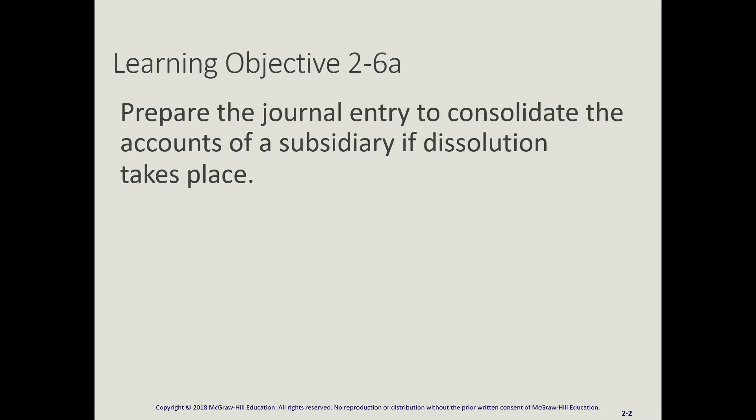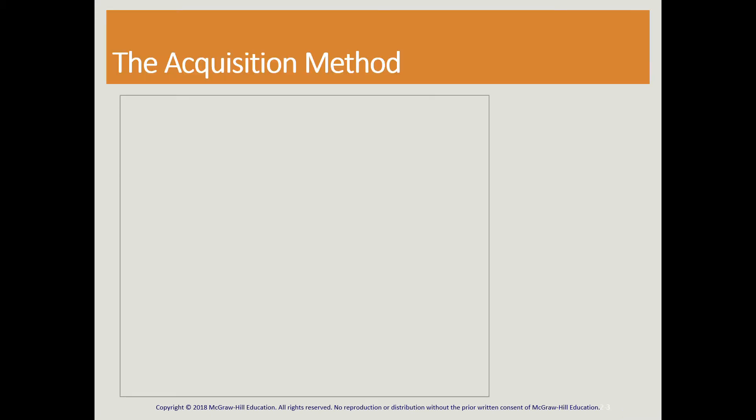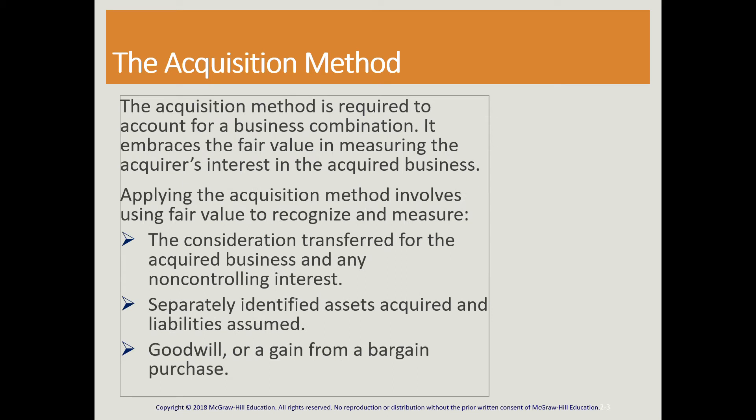If you look at the previous presentation, we were talking about the two types of business combination — one being the dissolution of either the purchasing company or the company that's being purchased, and then having one surviving company. We're using the acquisition method to account for this merger, which focuses on the fair value of assets and liabilities of the company being purchased on the date of acquisition.